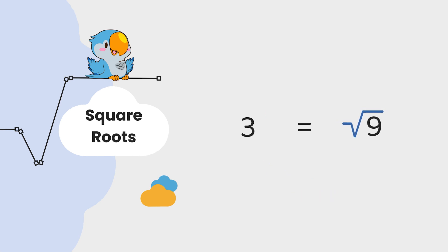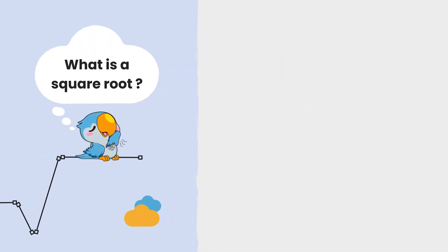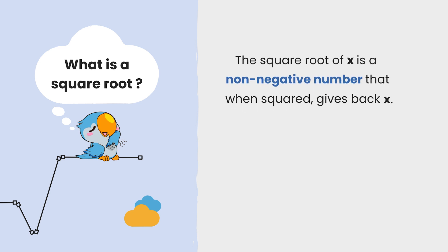The reverse process is called finding the square root. The square root of a real number x is a non-negative number that, when squared, gives back x.